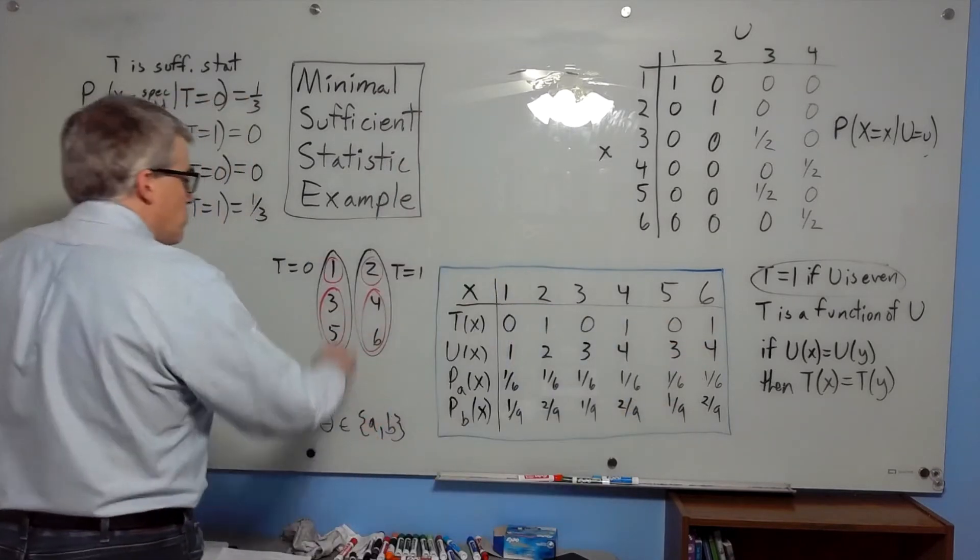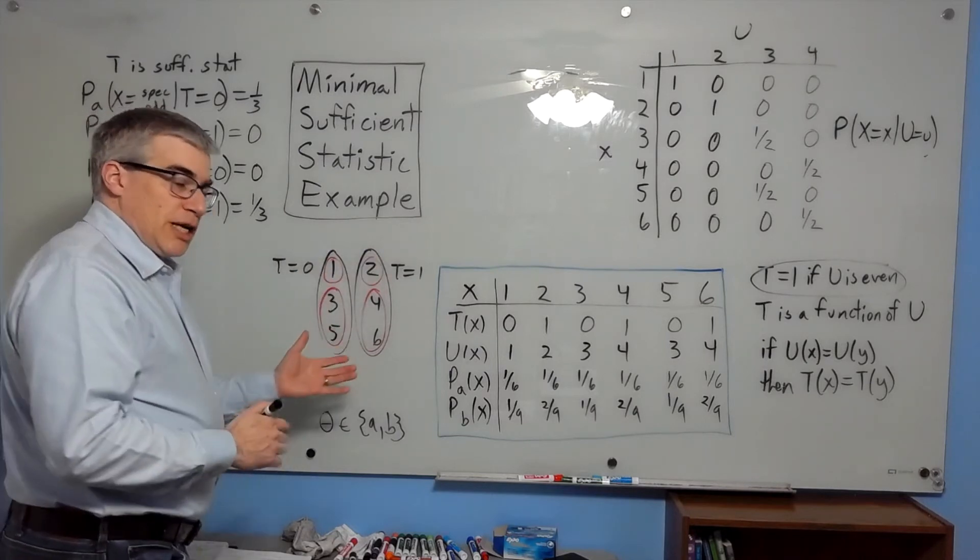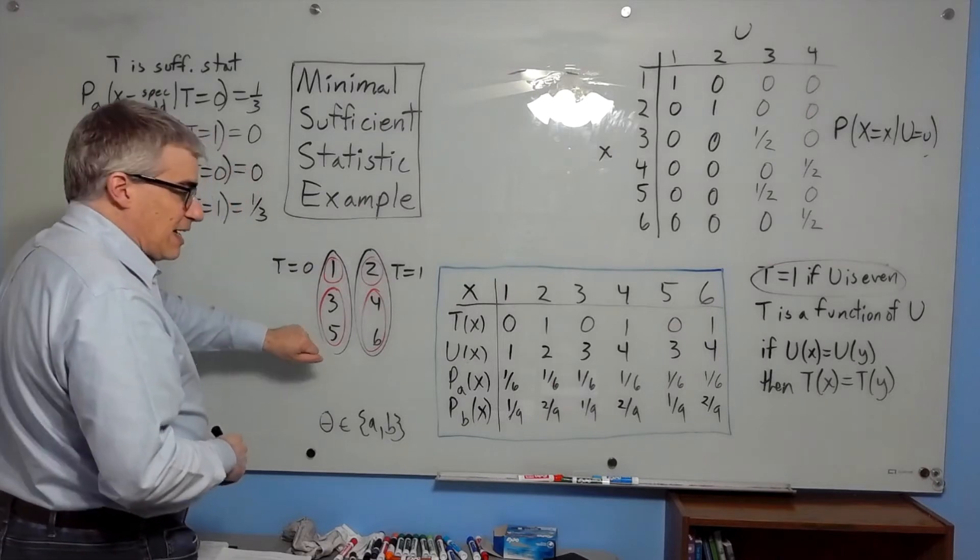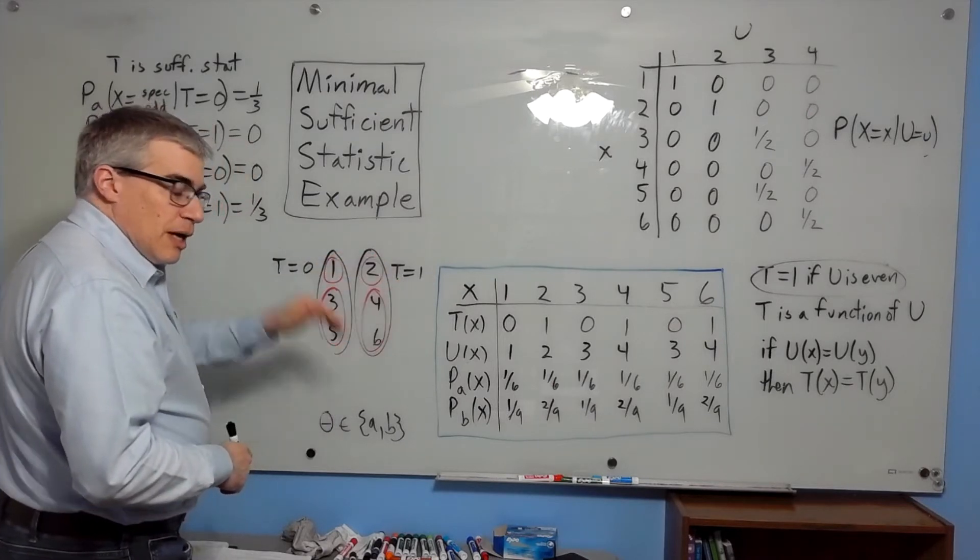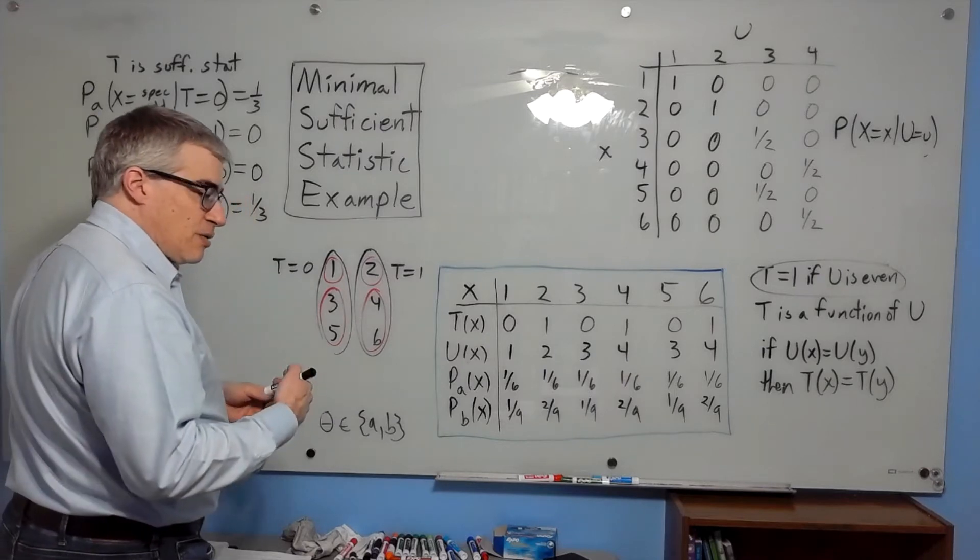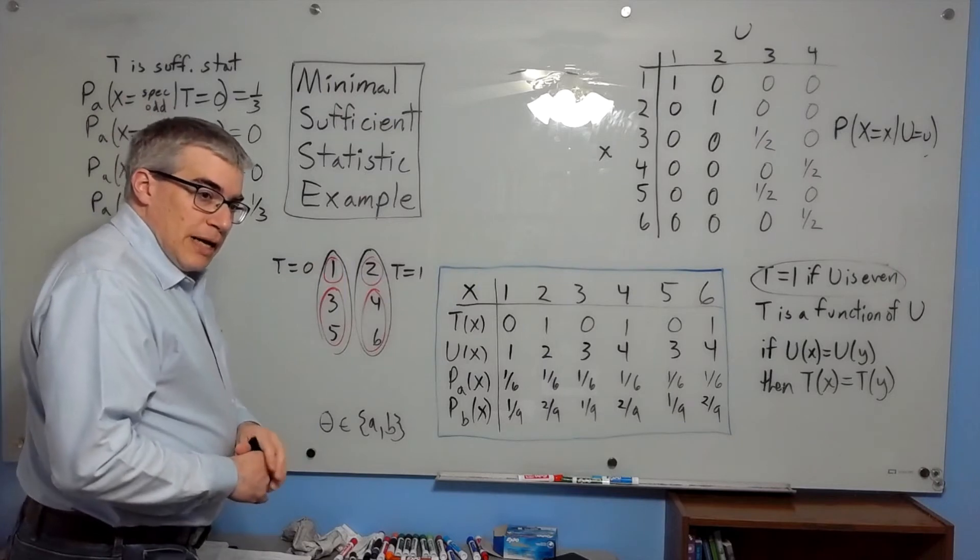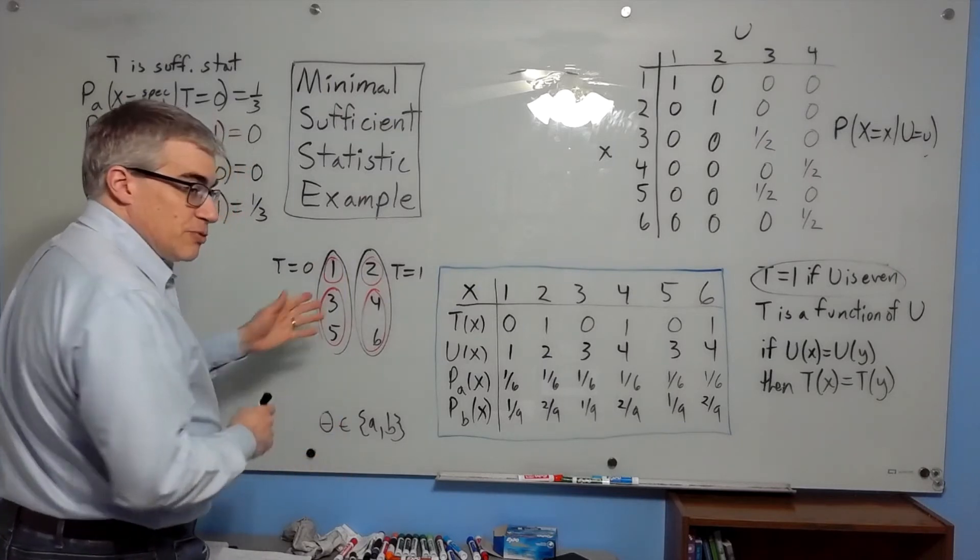In a single roll of the die, we're taking these six possibilities and dividing it, we're partitioning it. If t equals zero, that means we're in the group one, three, five. If t equals one, we're in the group two, four, six. And so when you pass on only the statistic, it tells you which of these two groups you're in, and it turns out for our purposes that's the relevant piece of information, so that will do the job.